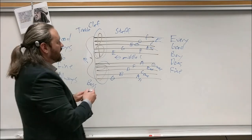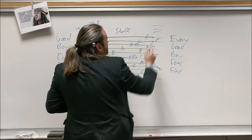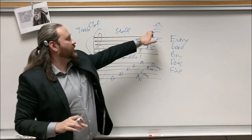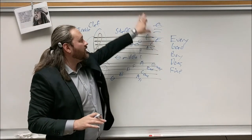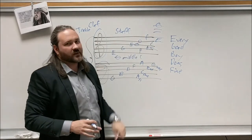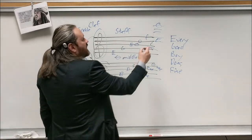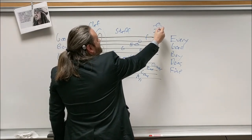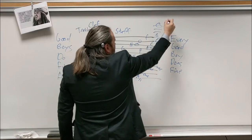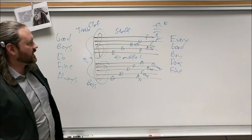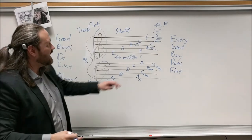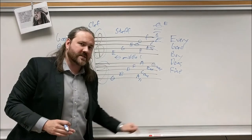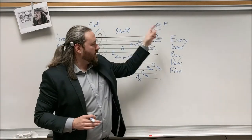Sometimes we run out of space on a staff, so we draw extra lines called ledger lines to reach higher or lower notes. To figure out what note a ledger line represents, you just continue the alphabet from the last known line or space. For example, from F on the top line, go G, A, B, C, D, E — so as long as you know your ABCs and start over at A after G, you can read ledger lines above and below.